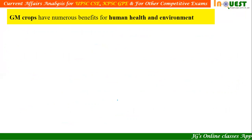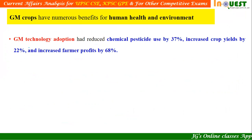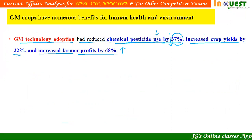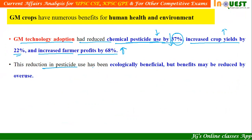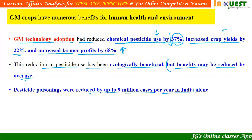Genetically modified crops have numerous benefits for human health and environment. Statistically, GM technology adoption has reduced chemical pesticide use by 37%, increased crop yields by 22%, and increased farmer profits by 68%. This reduction in pesticide use has been ecologically beneficial, but benefits may be reduced by overuse.